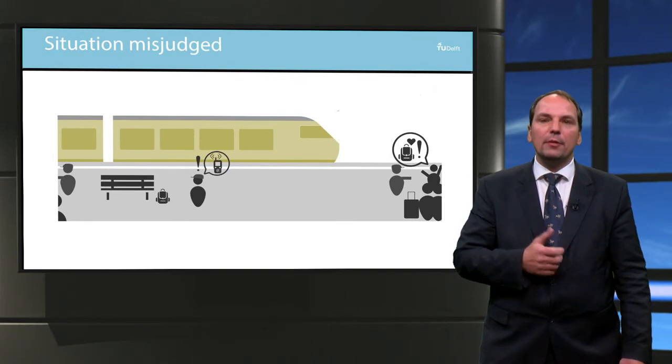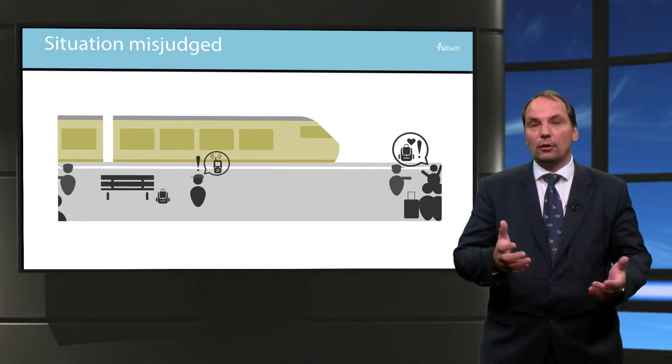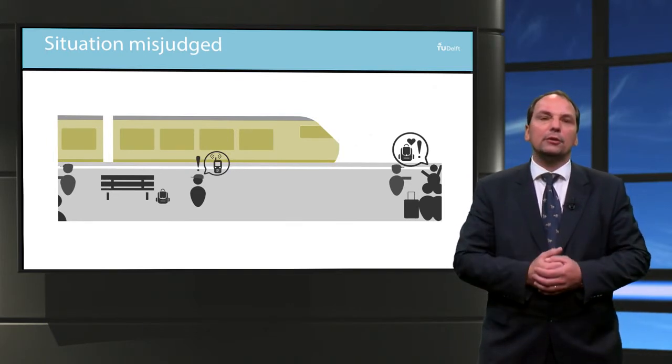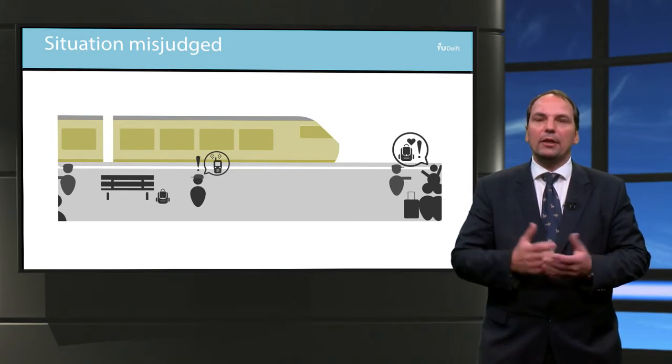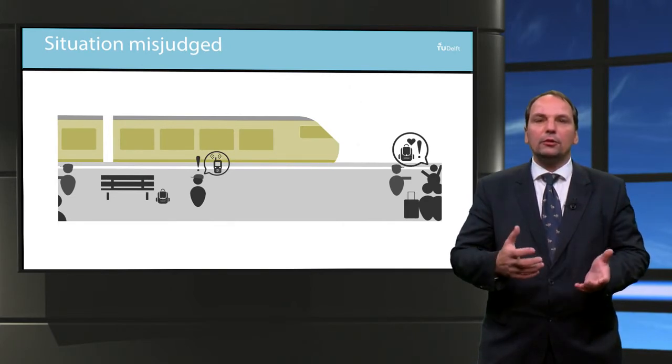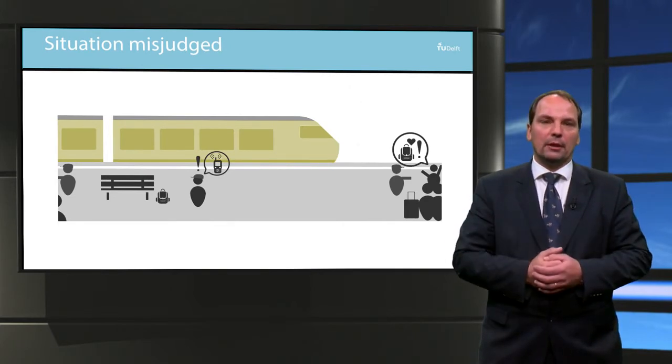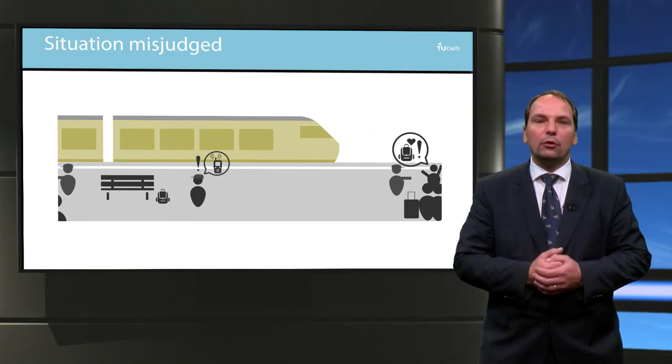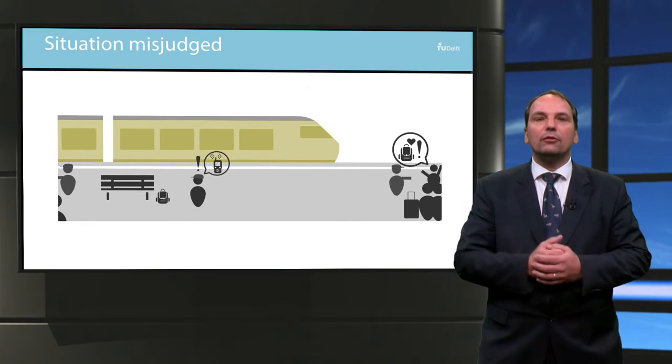Sometimes an incident is misjudged in an early stage, causing extreme measures which turn out to be unnecessary. The station could have been cleared too quickly, making it impossible for the owner of the travel bag to identify himself or herself. Wires turn out to be a headphone and the chosen level of precaution causes train delays and large scale inconvenience for many travelers.